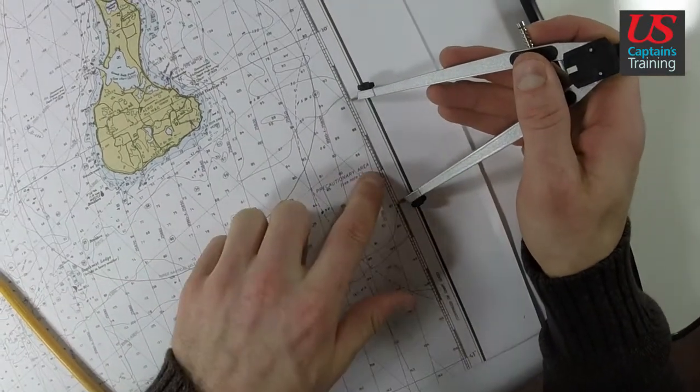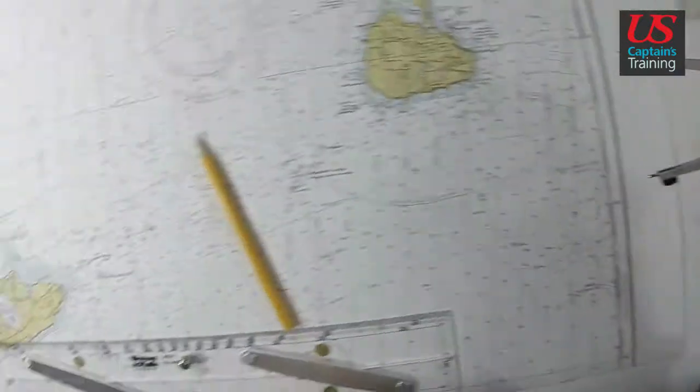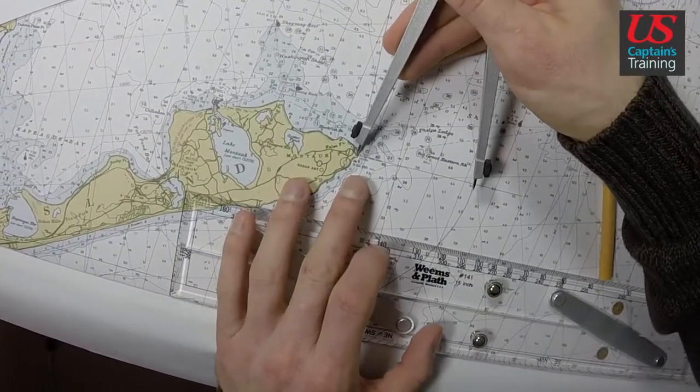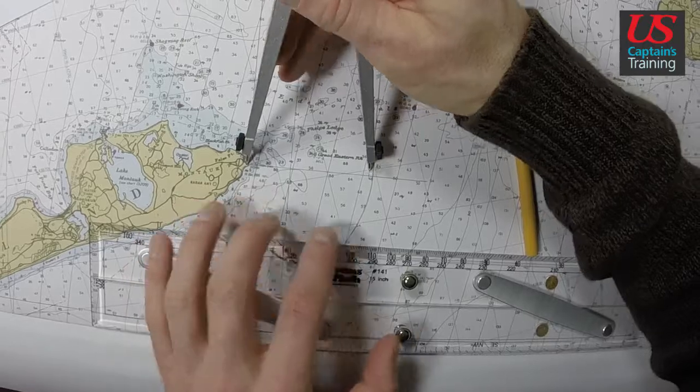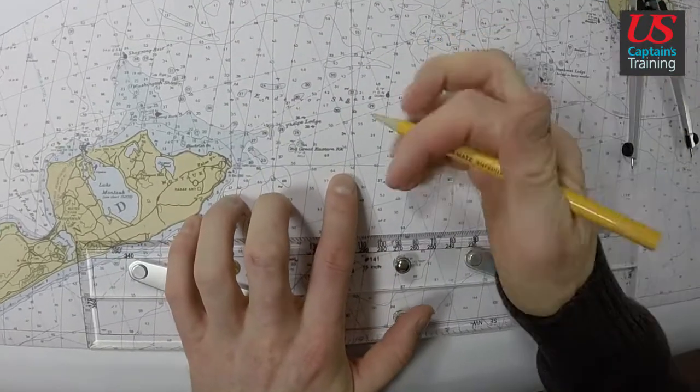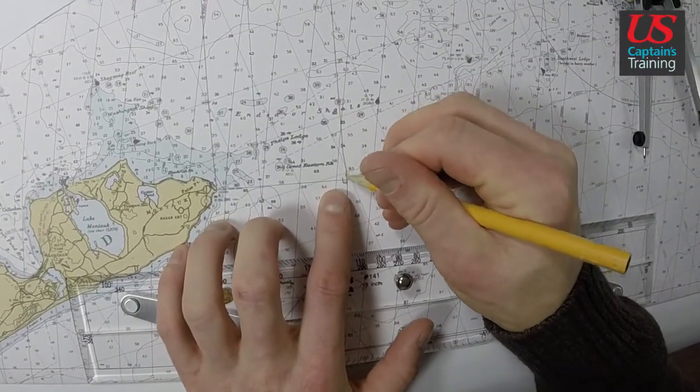Good, right? 1, 2, 3. And now from the dot of Montauk Point Light, make a mark. Now we have our starting point. Start.